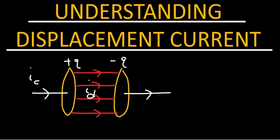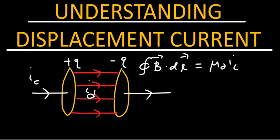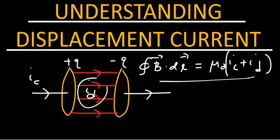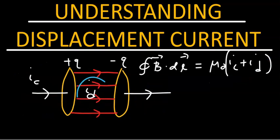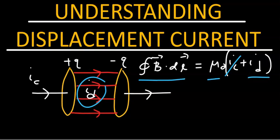What this all means is that our expression for Ampere's law must be modified to include the displacement current. That is the complete form for Ampere's law. In the wire region, displacement current doesn't exist, so the right-hand side of Ampere's law is mu-naught times Ic. In the region between the plates, where Ic doesn't exist, Ampere's law reads: the left-hand side equals mu-naught times the displacement current.